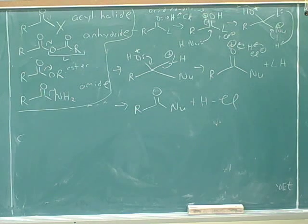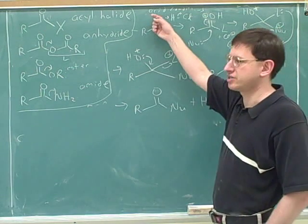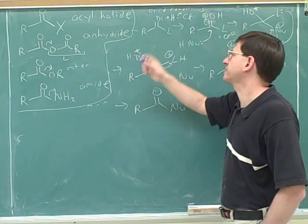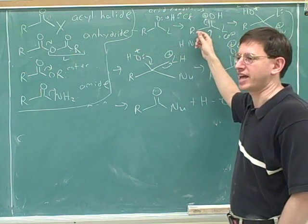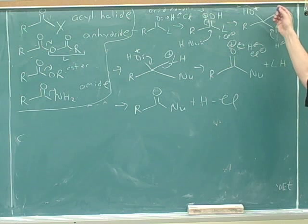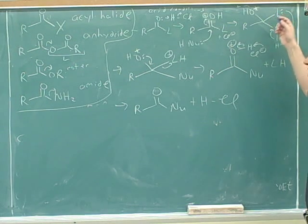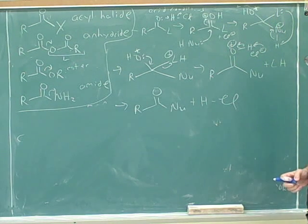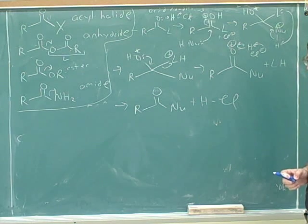So the one thing that's confusing is we ended up protonating two people. First the carbonyl oxygen to make it a better electrophile. It makes sense that you do that before the nucleophile attacks. And then you protonate the L group to make it a better leaving group. And it makes sense we do that right before the L group leaves. So the location of the protonations makes good sense.